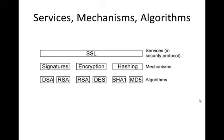We have three topics today: signature, encryption, and hashing. Each mechanism has its own algorithm. In very simple terms, an algorithm is the steps you follow to provide a mechanism. For example, if the mechanism is cooking a dessert, the algorithm is the steps you follow — like adding water, adding some flavors, and so on.